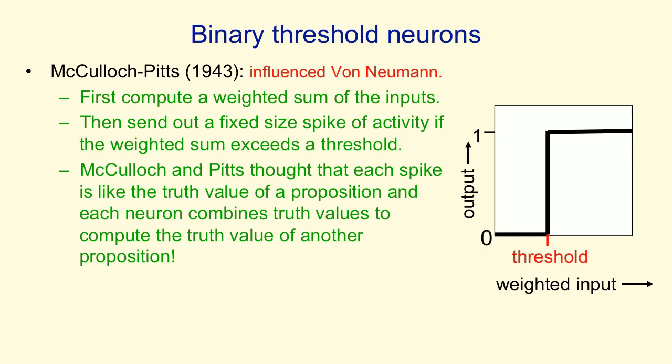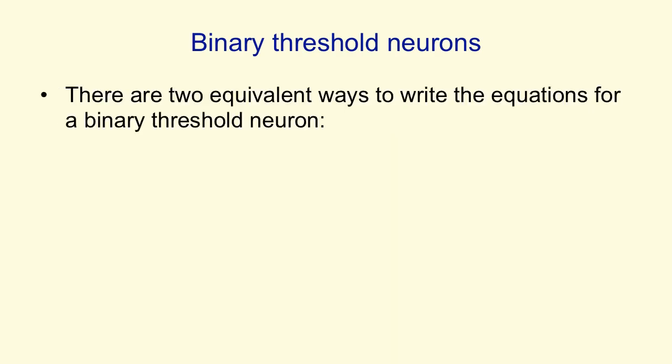For a binary threshold neuron, you can think of its input-output function as: if the weighted input is above the threshold, it gives an output of 1, otherwise it gives an output of 0. There are actually two equivalent ways to write the equations. We can say that the total input z is just the activities on the input lines times the weights, and then the output y is 1 if that z is above the threshold, and 0 otherwise.